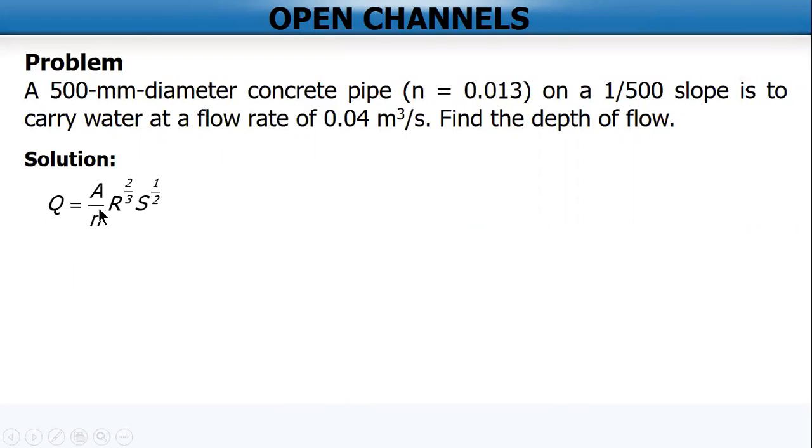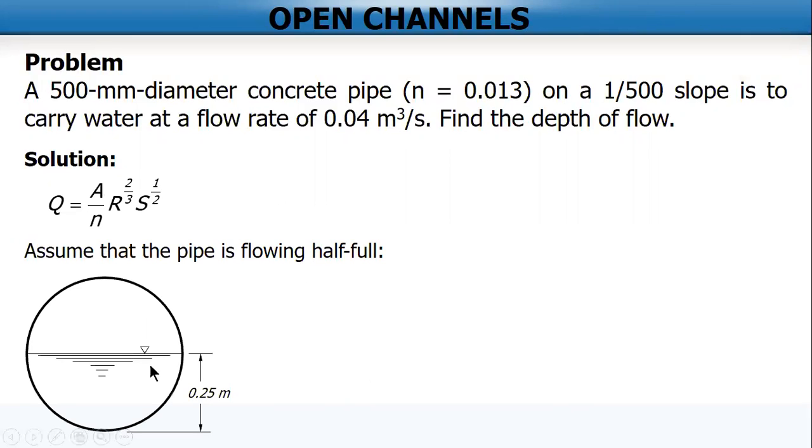We will use this formula: Manning's velocity equal to 1 over N, R to two-thirds and S to one-half. Velocity times area is equal to discharge or the flow rate. So let's assume that the pipe is flowing half full. The diameter is 500 millimeters or 0.5 meters, so the radius is 0.25 meters.